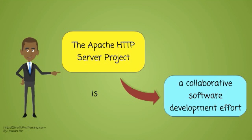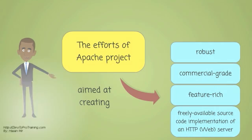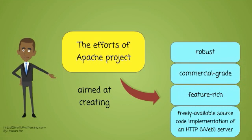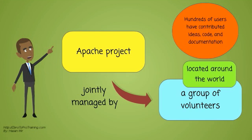The Apache HTTP Server project is a collaborative software development effort. The efforts are aimed at creating a robust, commercial-grade, feature-rich, and freely available source code implementation of an HTTP web server. The project is jointly managed by a group of volunteers located around the world. In addition, hundreds of users have contributed ideas, code, and documentation to the project.